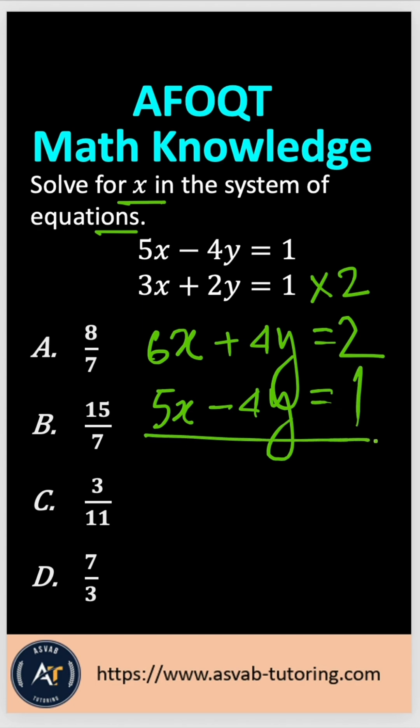Now you have to combine these two equations. So that means this 4y, 4y cancel out. That gives you 5x plus 6x, 11x equal to 3.